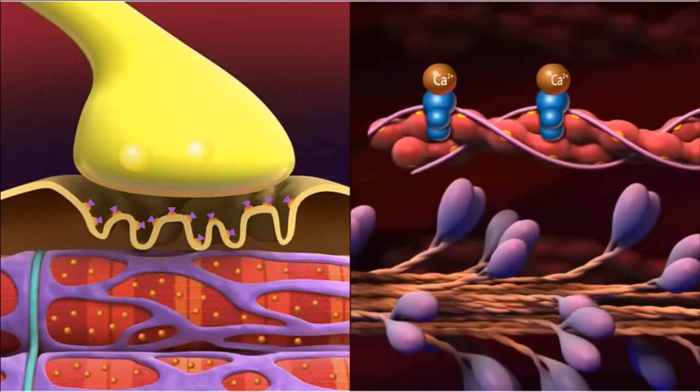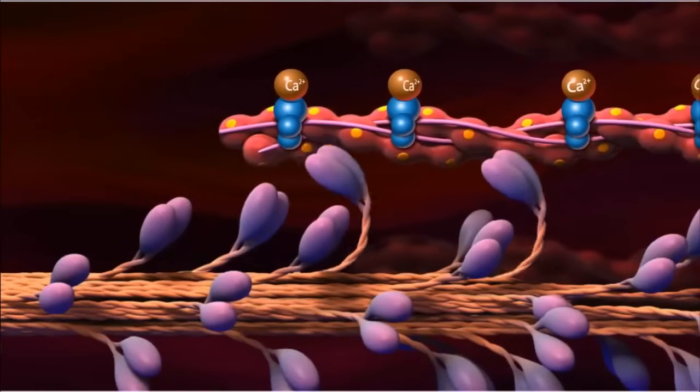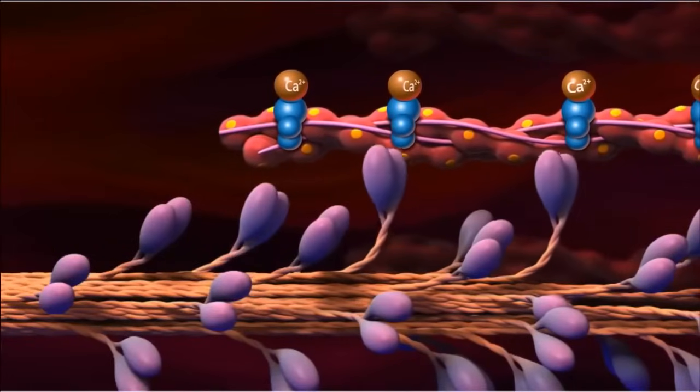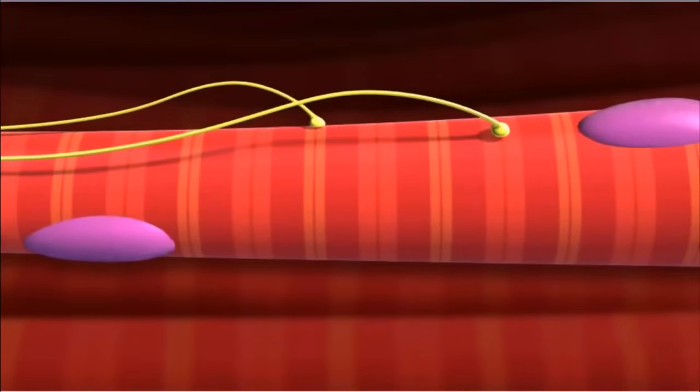Calcium ions flow to the myofibrils, where they trigger a muscle contraction. As the actin and myosin slide along each other, the entire sarcomere shortens as the Z-lines draw closer to the M-line. As the sarcomeres in myofibrils contract,